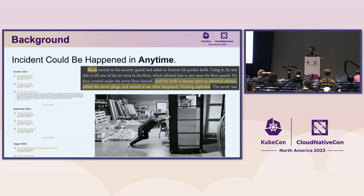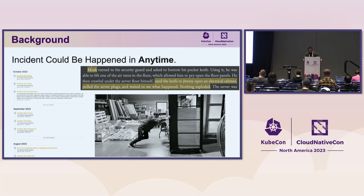Failures and incidents can happen anytime. Looking at the timeline, you'll see almost 44 outages in the past three months within GitHub itself. Regardless of the size of the organization, the number of engineers, or the best practices followed, things can fail — and they do. Human error, poor decision making — anything can lead to these outcomes.